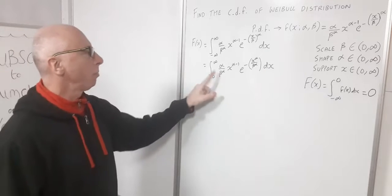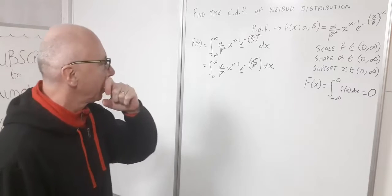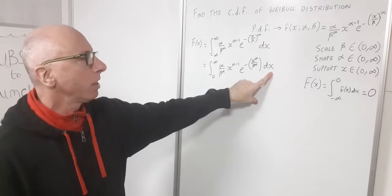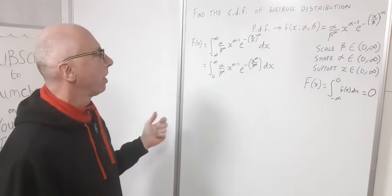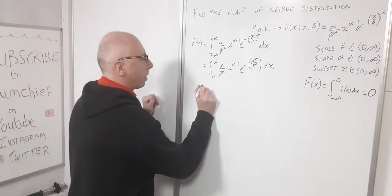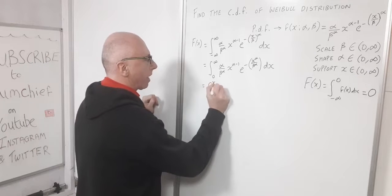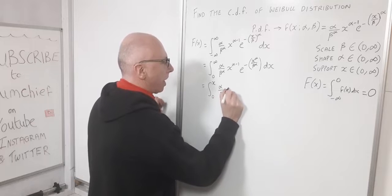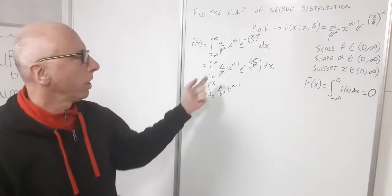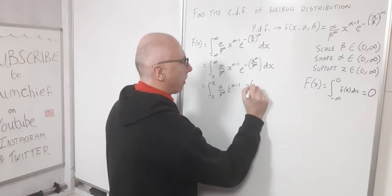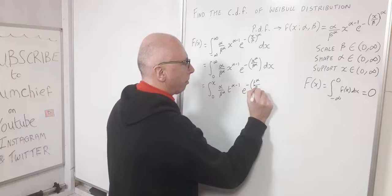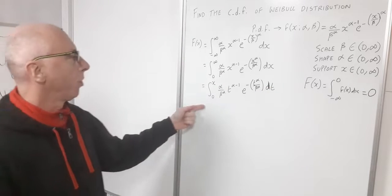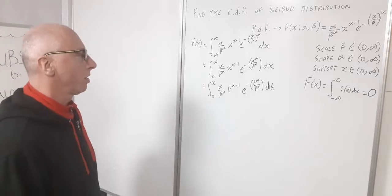I'm going to do a substitution. Instead of integrating in terms of x, I'll introduce a parameter t to help with integration. I'll change x to t and integrate from zero to x — that way I'll get x out of it. So I have alpha over beta to the alpha, times t to the alpha minus one, times e to the negative t to the alpha over beta to the alpha, dt. Integrating in this format will make things easier.